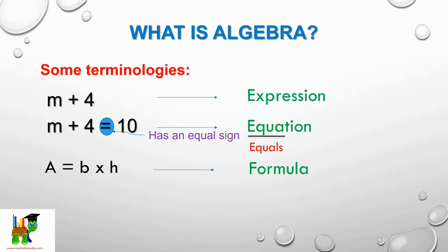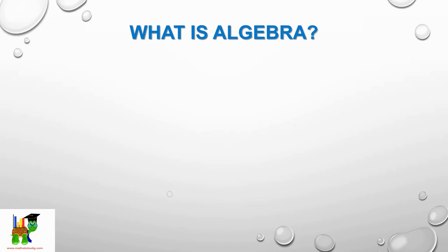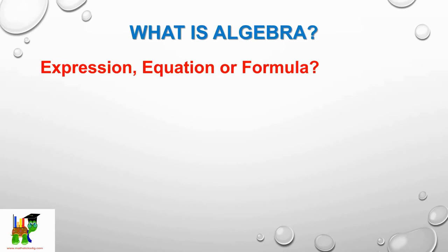Equation comes from the word equals, so that's how you should remember there's an equal sign in equation. Now what about formula? It also has an equal sign, but formula is made out of various letters. In fact, we've got three letters here, so that is a formula.